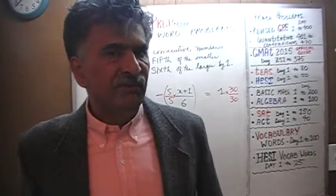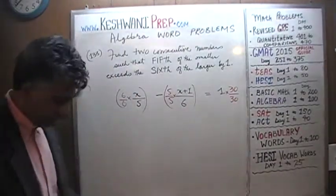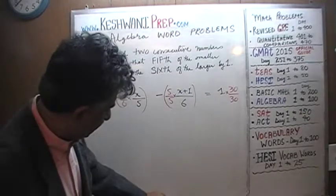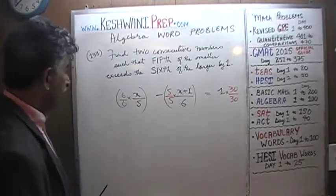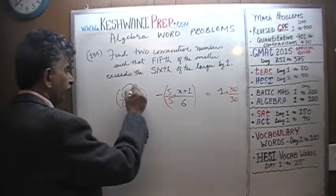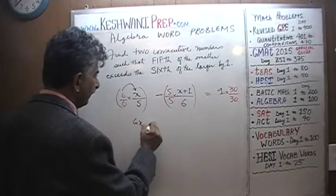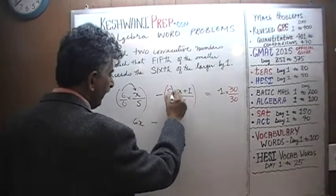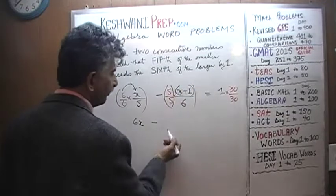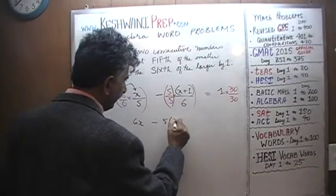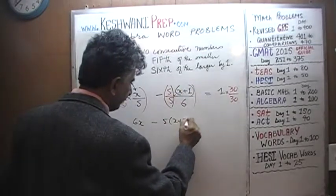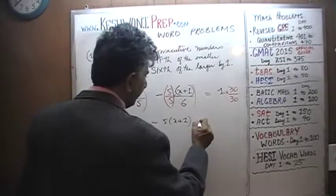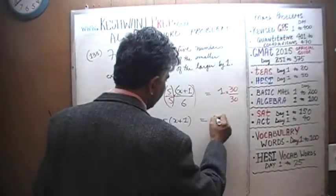Since all terms have the same denominators, we are at liberty to simply ignore them — they play no role. So we can ignore the 30 and just solve the equation. We have 6 times x, which is 6x, minus 5 times the quantity x plus 1. That would have to equal 1 times 30, which is 30.